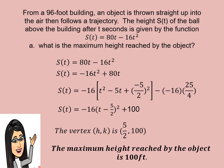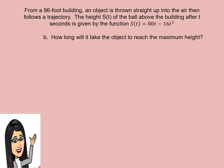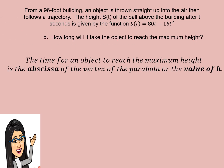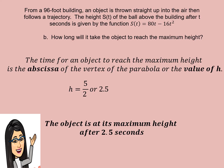This means that the maximum height reached by the object is 100 feet. For the second question — how long will it take the object to reach the maximum height — remember that the time to reach maximum height is the abscissa of the vertex, which is the value of H. Therefore H is equal to 5/2 or 2.5. This means the object is at its maximum height after 2.5 seconds.